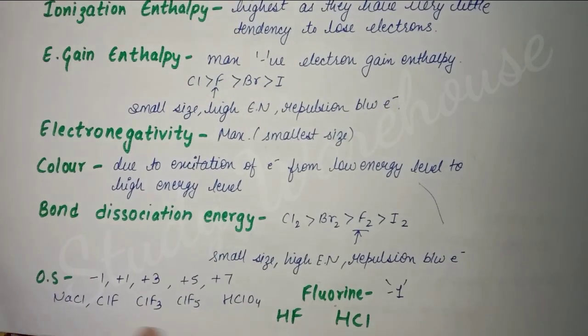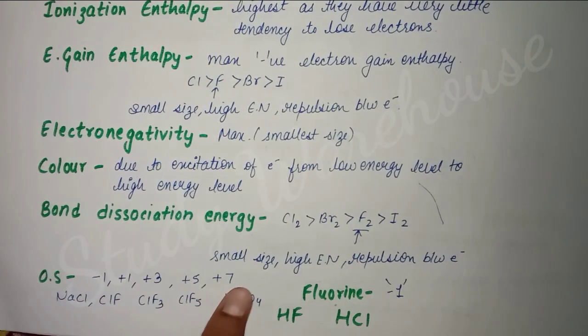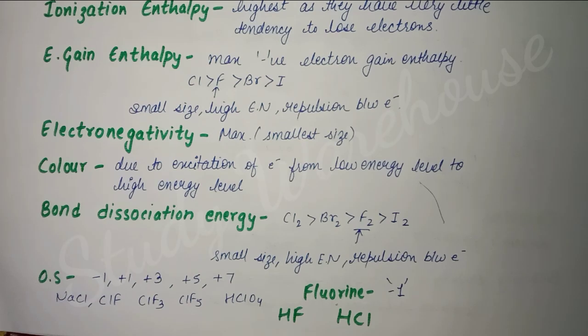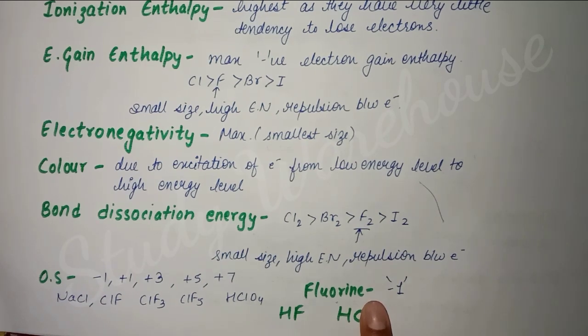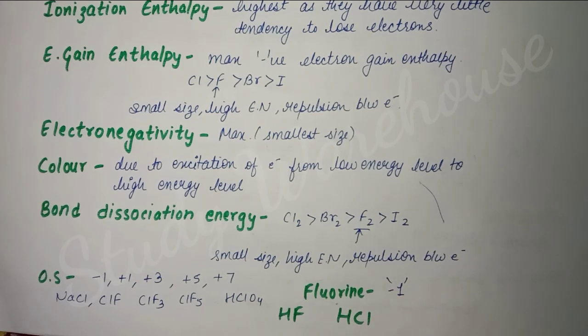If we talk about oxidation states, they exhibit -1, +1, +3, +5, and +7 oxidation states. If we talk about fluorine, it only exhibits -1 and does not exhibit any other oxidation state. The reason is due to its small size, high electronegativity, and absence of d orbitals. Whatever anomalous properties you see, you simply have to write these same reasons when any question is asked about the first element.